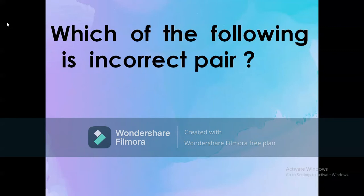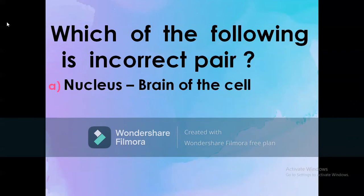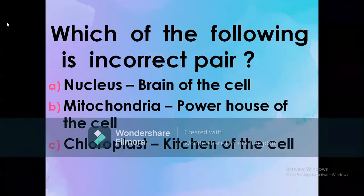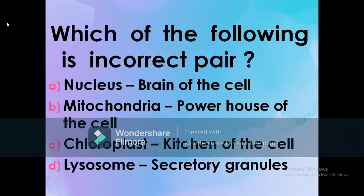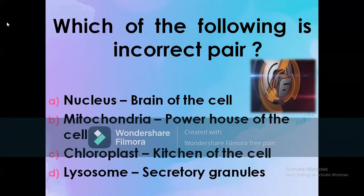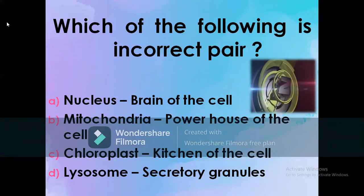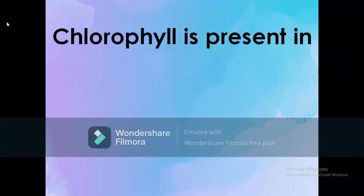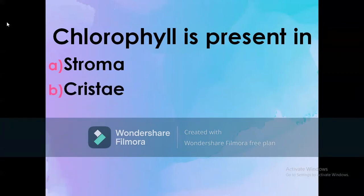Which of the following is an incorrect pair? A) Nucleus – brain of the cell, B) Mitochondria – powerhouse of the cell, C) Chloroplast – kitchen of the cell, D) Lysosome – secretary granules. The correct option is D: Lysosome – secretary granules.